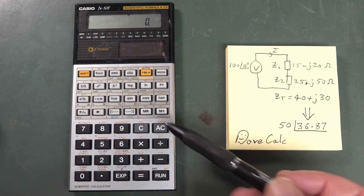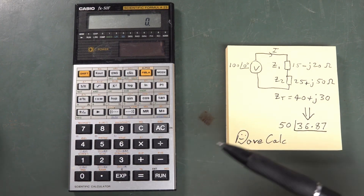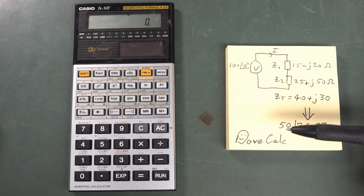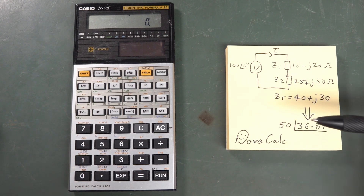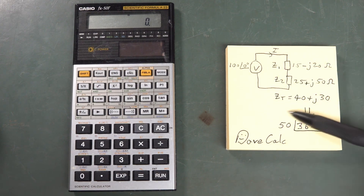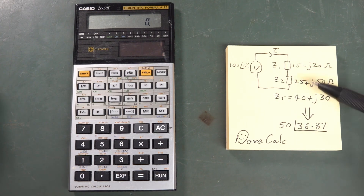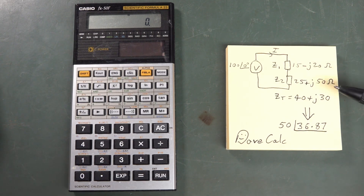I'm going to show you how to use your Casio calculator to convert between rectangular and polar form and polar to rectangular form. You might want to do this if you're doing any complex number maths in, say, AC circuit theory, which I've done tutorial videos on.